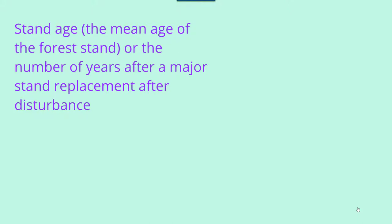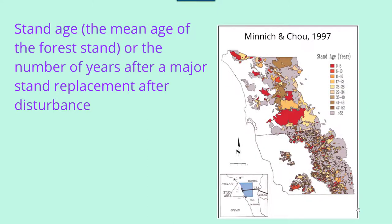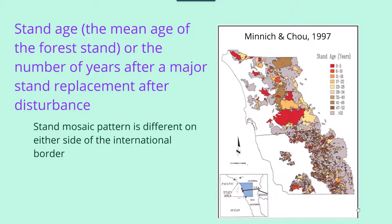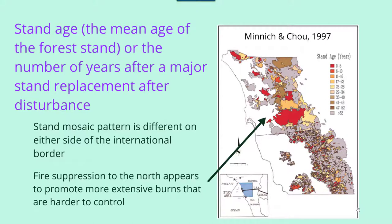The stand age — the mean age of the forest stand or the number of years after a major stand replacement following a disturbance — can be influenced by fire management. In this example by Minich and Chou in 1997, stand age in years is represented by the color scale on the right-hand side. You can see how the stand mosaic pattern is different on either side of the international border, which is interesting. Fire suppression in the north appears to promote more extensive burns that are harder to control than is occurring in the southern part of the map, and you can also see a large distribution of much younger forest stands because of that.